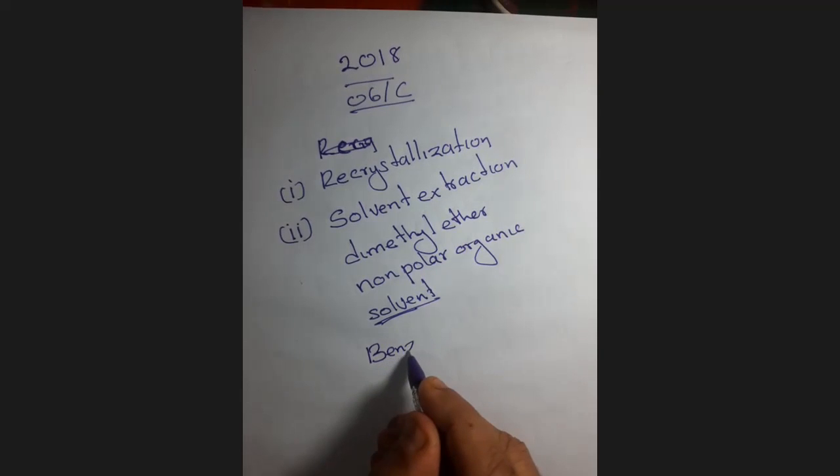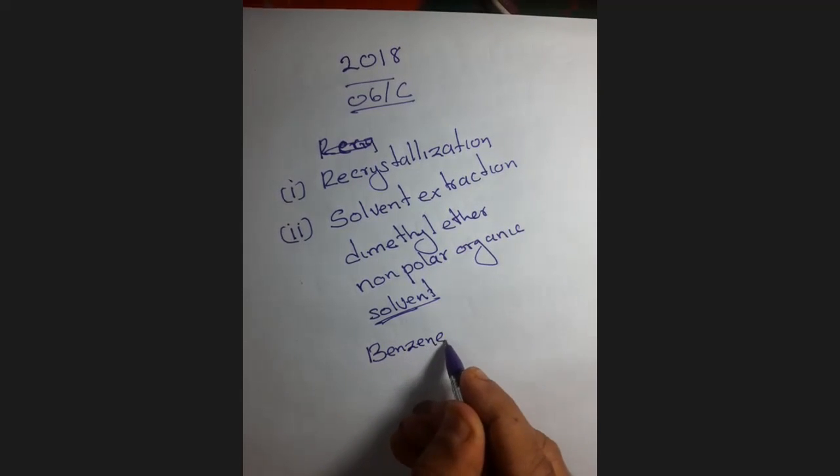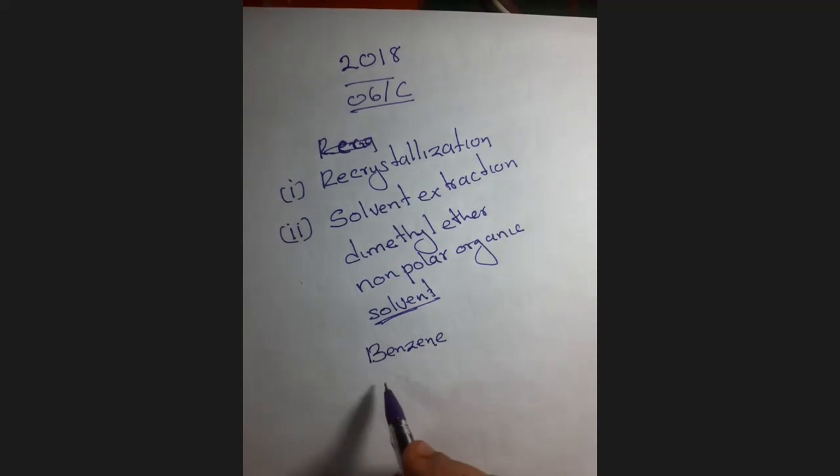Benzene is a volatile non-polar solvent. Hexane is a volatile non-polar solvent, organic solvent. So, in that list, dimethyl ether also falls.